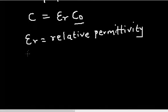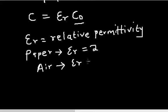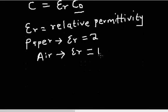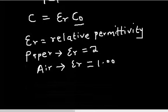Different types of insulators have different relative permittivities. For example, the relative permittivity of paper is approximately 2. The relative permittivity of air is 1, and that is why air can also be considered as equivalent to free space, since their relative permittivities are both approximately 1.